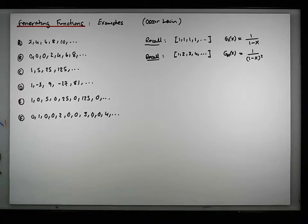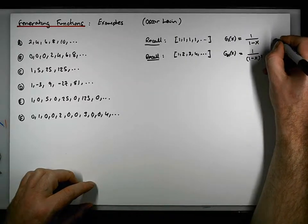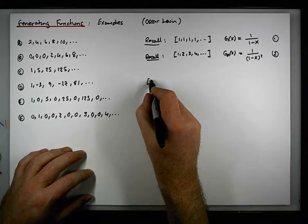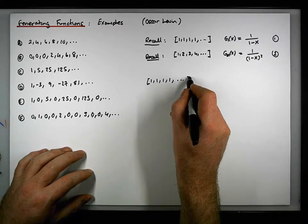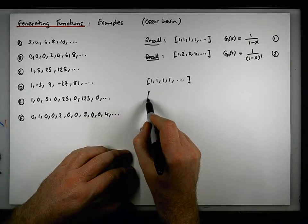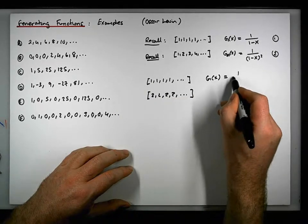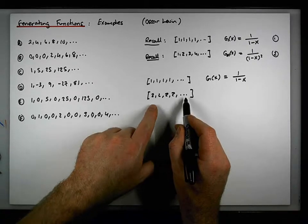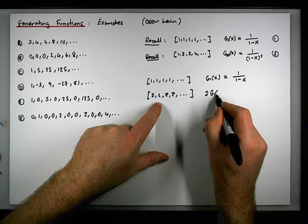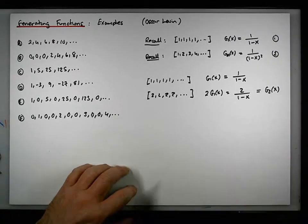Before we move on, let's just do some modifications to these sequences. Taking the constant sequence — let's call it sequence 1 — if we multiply it by 2, it becomes 2, 2, 2, 2, … The generating function for this sequence of constant 2s is simply 2 times g₁(x), which gives us 2/(1−x). We could label that g₂(x), representing the sequence of constant 2s.